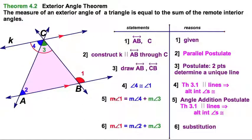The measure of angle one, that's this angle, the exterior angle is equal to the sum of the remote interior angles. That is the two interior angles of this triangle, which are not touching angle one.